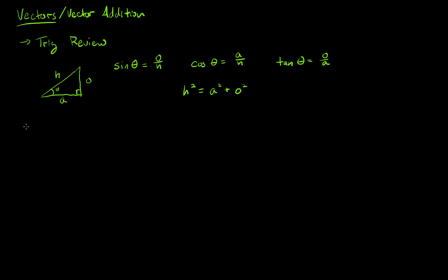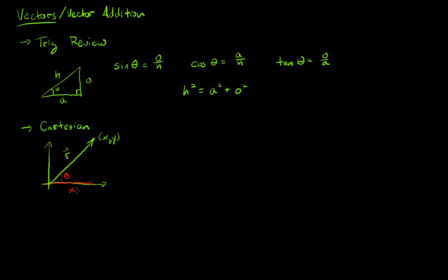In Cartesian coordinates — the XY coordinate system — we define a vector R that starts at the origin and goes up to some point XY. We make it into a right triangle so we can use trig. If I have an angle theta here, I move in the X direction and then the Y direction, giving me two sides and a right triangle.